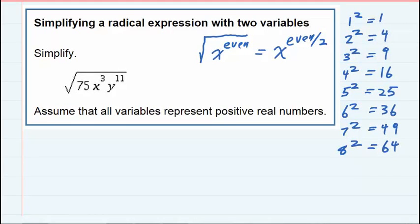Simplifying a radical expression with two variables. We're asked to simplify the square root of 75x³y¹¹.